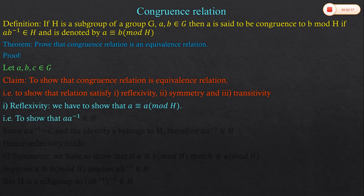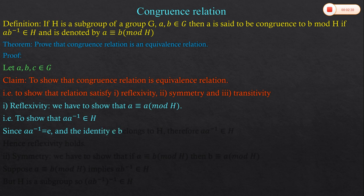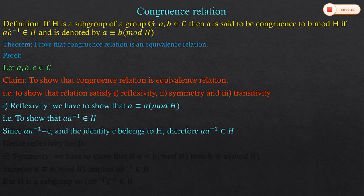Suppose we take element a — then we have to prove that a ≡ a (mod H). To show this, we need to show that a into a inverse belongs to H. Since a is an element and a inverse is its inverse, a into a inverse equals the identity element e.